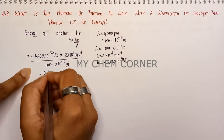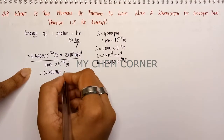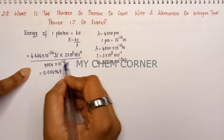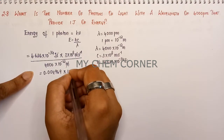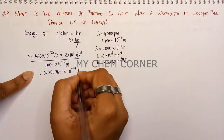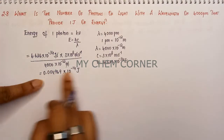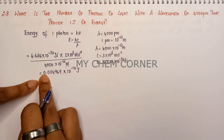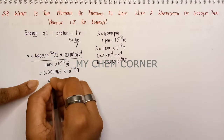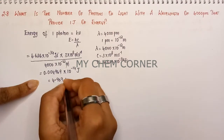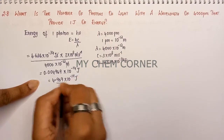Simplifying: 6.626 × 3 ÷ 4000 gives 0.004969, and the powers of 10 combine as −34 + 8 + 12 = −14, giving 0.004969 × 10⁻¹⁴ joule. Shifting the decimal, this becomes 4.969 × 10⁻¹⁷ joule. This is the energy provided by one photon.